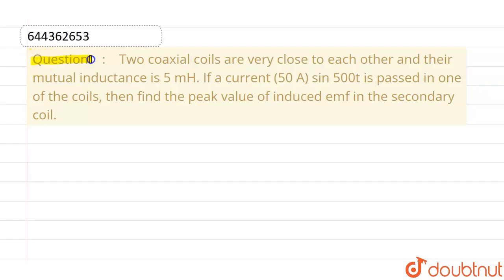Hello everyone, if we talk about this question, this given question is two coaxial coils are very close to each other and their mutual inductance is 5 mH. Now if a current 50 sin 500t is passed in one of the coils, then we have to find out the peak value of induced EMF in the secondary coil.